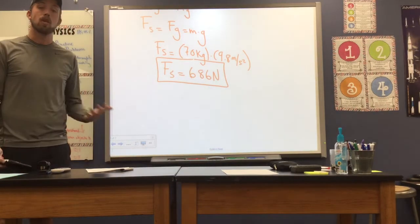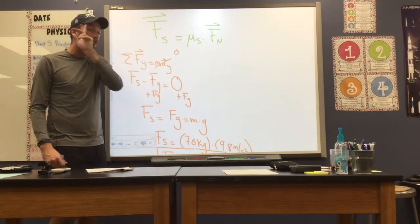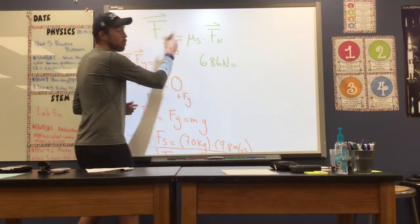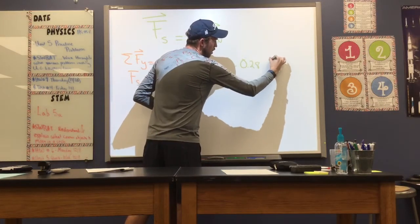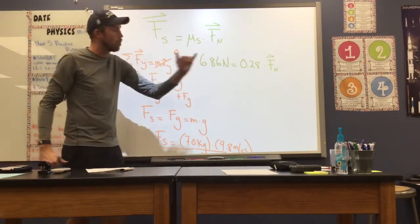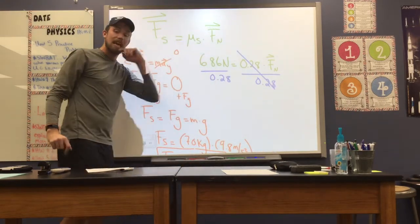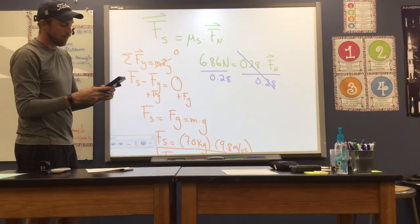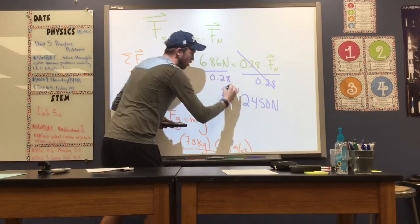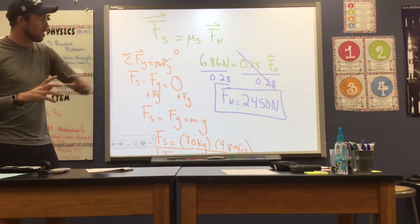So this is our starting point — there are a lot of steps we have to go through, but we're using a lot of things we've covered over the last couple of months. Now that we have our force of static friction, we're going to plug it in to solve for our normal force. Force of static friction, 686 newtons, is equal to our coefficient, which is 0.28, times the normal force. To get normal force by itself, we divide by 0.28 on both sides. That gives us our normal force: 686 divided by 0.28 equals 2,450 newtons.